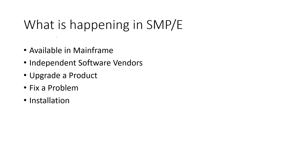Our next topic is what is happening in SMP and why we use it. SMP is an application available only in mainframe z/OS and OS/390, but it is not available for VM, Linux, or UNIX. It is an independent software vendor product, and we use SMP to bring up the system for installation. After the SMP process, you will get your runtime library to install the product. SMP is also used to fix problems with a product and to track the installation-defined chains.